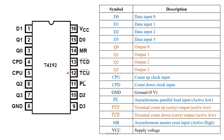This is the 74192 pin diagram. It consists of 16 pins total: four data input pins, four output pins, two clock inputs — one for up counting and one for down counting — a ground pin and a VCC pin, a parallel load pin which is active low and asynchronous in nature, and MR, the master reset, which is active high and asynchronous. TCU and TCD are terminal count up and terminal count down respectively, and both are active low.